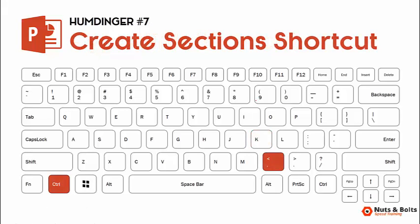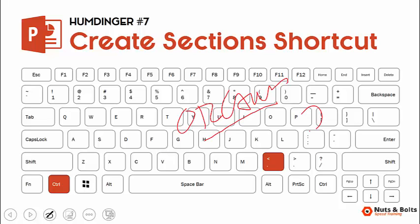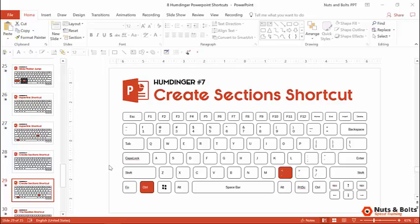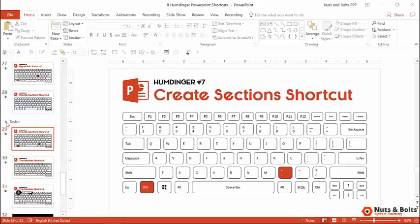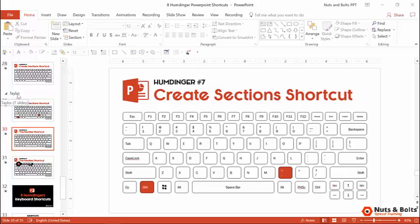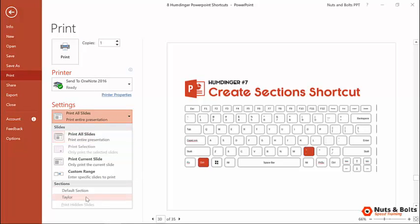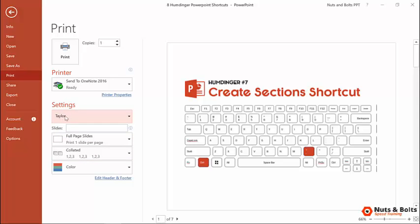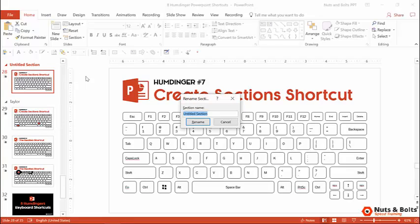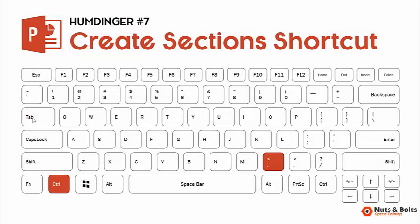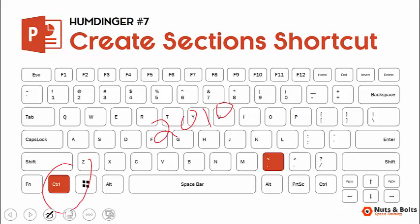That brings us to humdinger number seven: the create sections shortcut, which is great for organizing your presentation. I believe this is a PowerPoint 2010 and later shortcut, so if you have PowerPoint 2007 you might be out of luck. Here in the normal view, I recommend first clicking your slide on the left, then hit Ctrl+Left Caret, which will create a section for you without jumping you to the end of your slide. You can rename the section — for example, 'Taylor's section that he needs to do.' The cool thing about naming sections is you can open and close them, and if you want to print just that section, Ctrl+P to print, open up 'all slides,' and you'll see your sections listed, letting you print just your section. This is a great way to organize your slides for a team with the Ctrl+Left Caret shortcut.